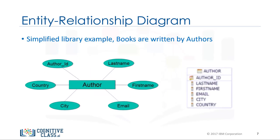Continuing the simplified library example, books are written by authors. Book is an entity, and author is an entity. For the entity author, the ER diagram would look like this. The entity author has attributes such as the author's last name, first name, email, city, country, and an author ID to uniquely identify the author. The entity author becomes a table in the database, and the attributes become the columns in the table.